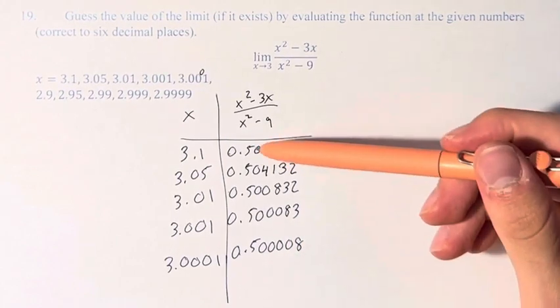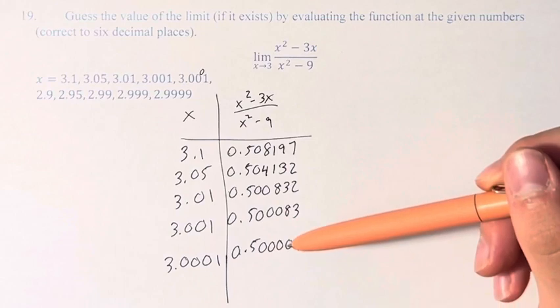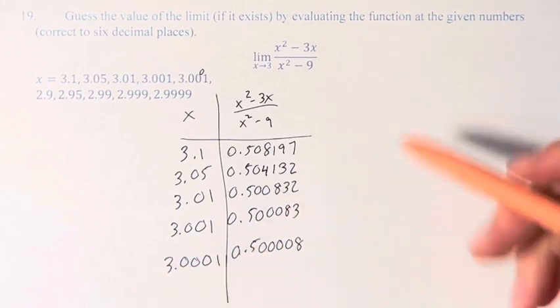So you can see that these values are approaching 0.5. But this is only from the right, we also have to try it from the left.